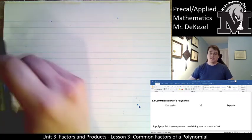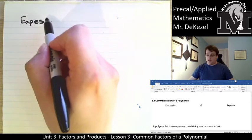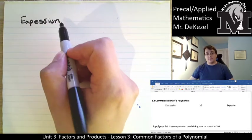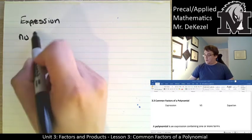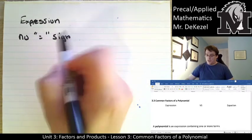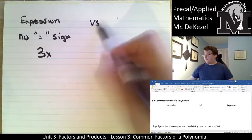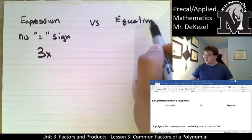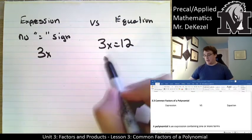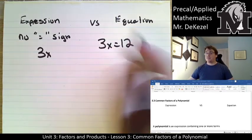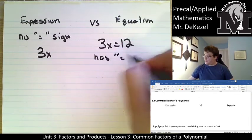I'll explain what that means. An expression has no equal sign. So for example, 3x is an expression — there is no equal sign. Versus an equation where there is an equal sign, something like 3x equals 12. We would be able to know that x is 4 because 3 times 4 is 12. So an expression has no equal sign, and an equation has an equal sign.